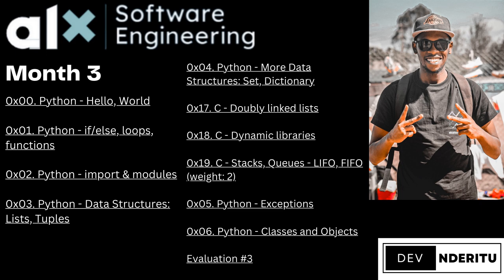Welcome back everyone. In previous videos we covered month zero, month one, and month two, where we went through some of the modules and C projects. The most notable were c_printf, which marks the middle of the sprint, and c_simple_shell, which marks the end of sprint one — that's the major project in sprint one.